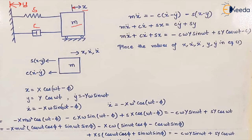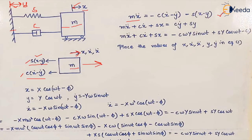The equation of motion becomes: m x-double-dot equals the sum of forces. From the free body diagram, displacement, velocity, and acceleration of the mass are in one direction. The spring force depends on the relative displacement of the mass and the ground, so it is s times (x minus y). Similarly, the damper force is c times (x-dot minus y-dot). Since these two forces oppose the motion, we use a negative sign, giving: m x-double-dot = -s(x - y) - c(x-dot - y-dot).